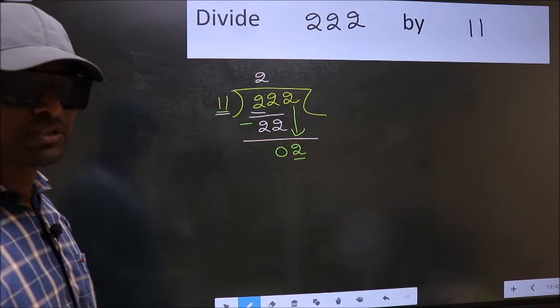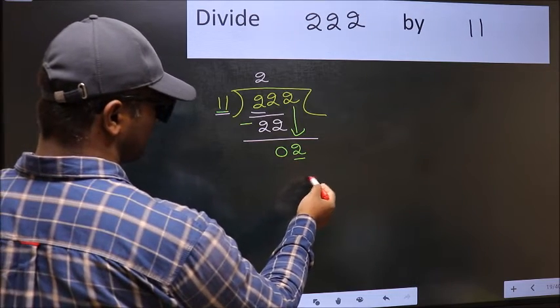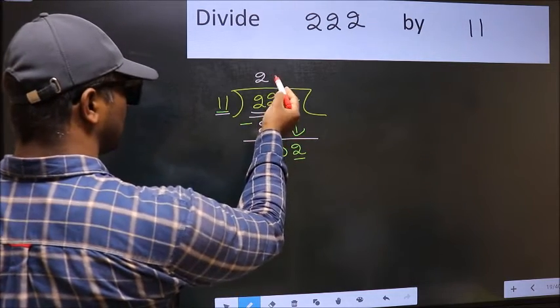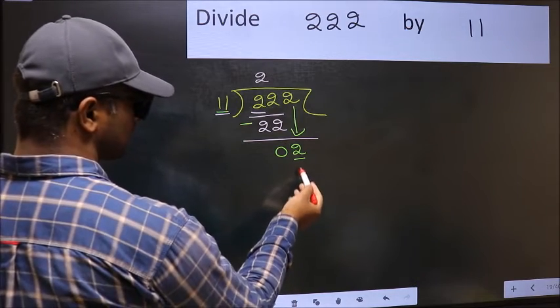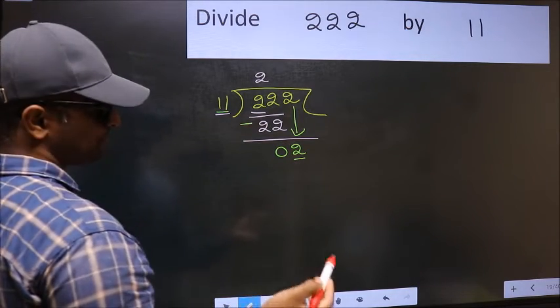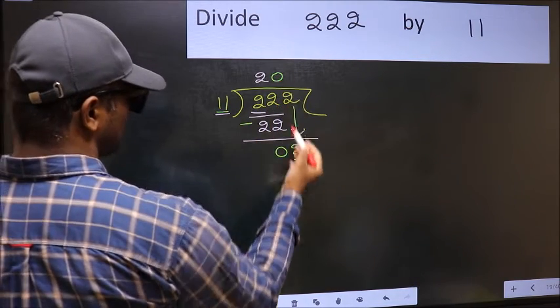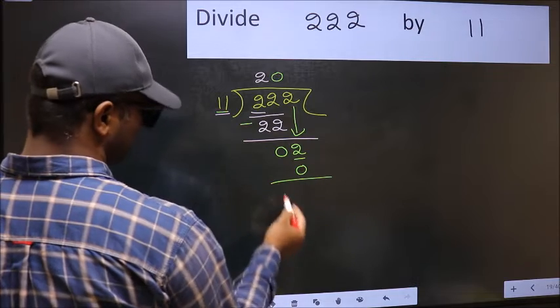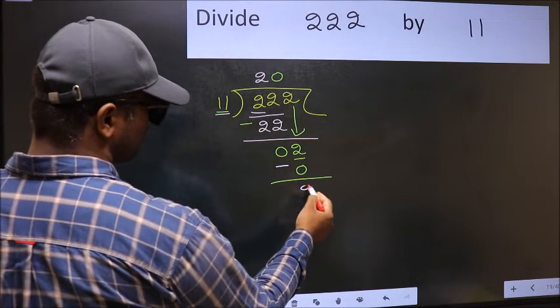Instead, what you should think of doing is, which number should we take here. If I take 1, we will get 11. But, 11 is larger than 2. So, what we should do is, we should take 0. So, 11 into 0, 0. Now, you should subtract. 2 minus 0, 2.